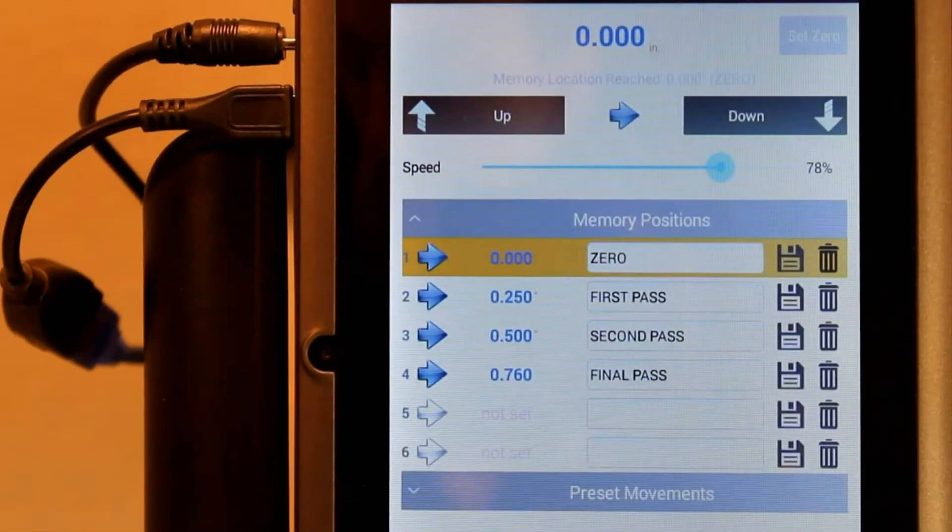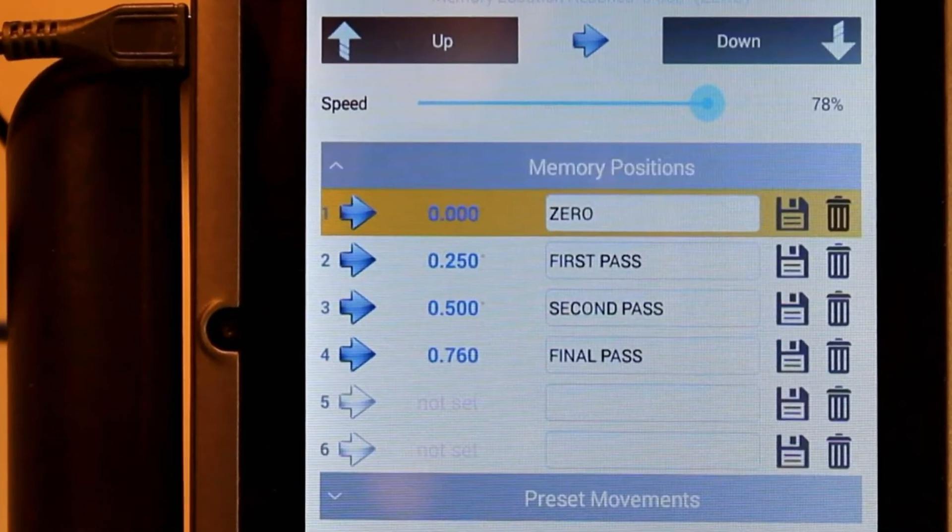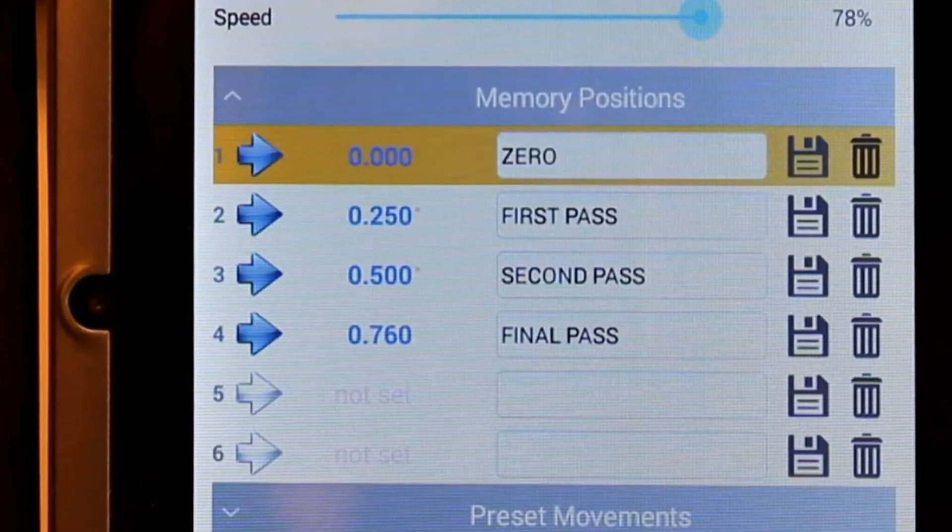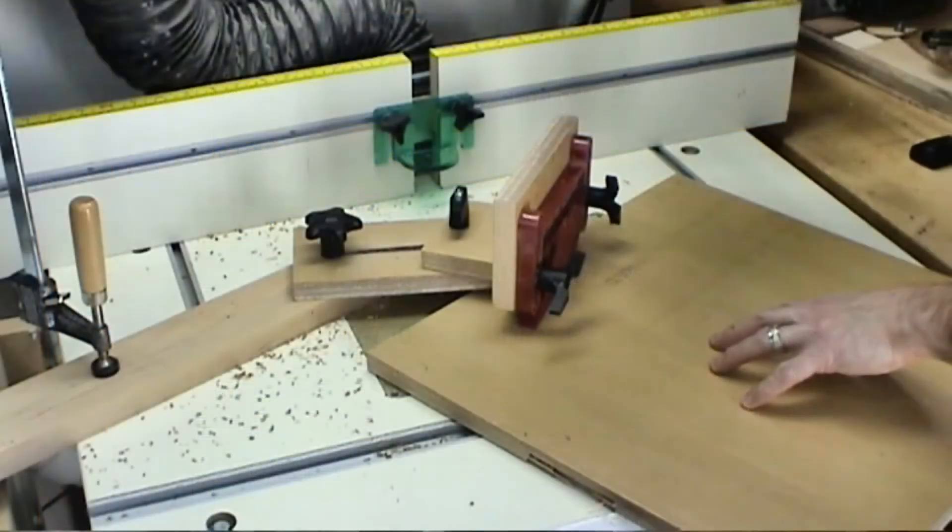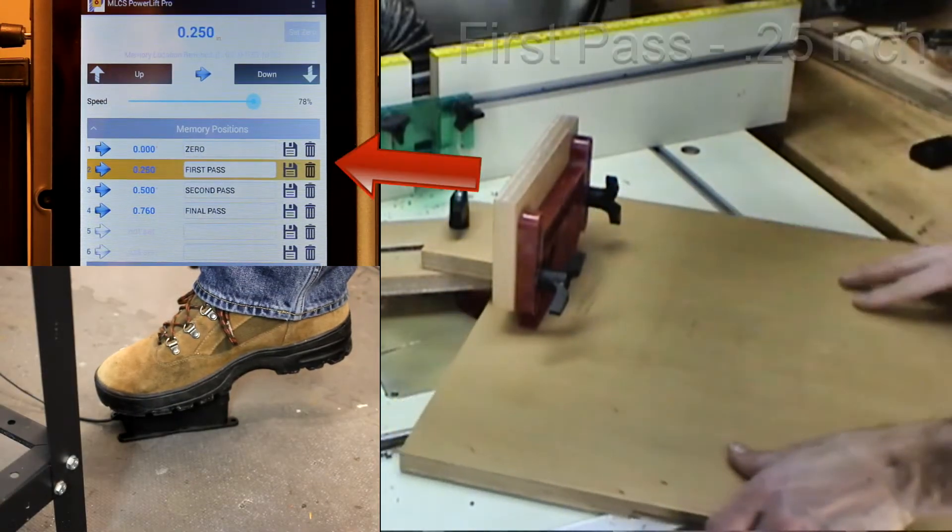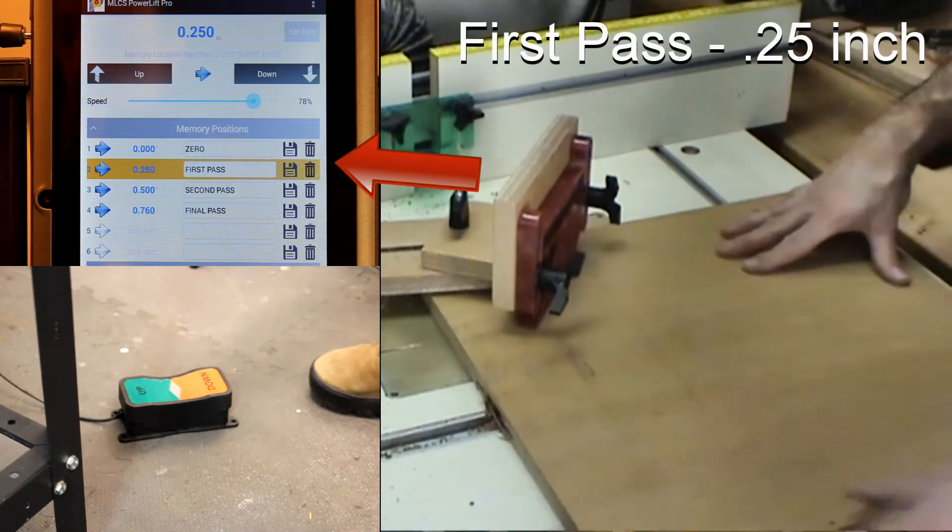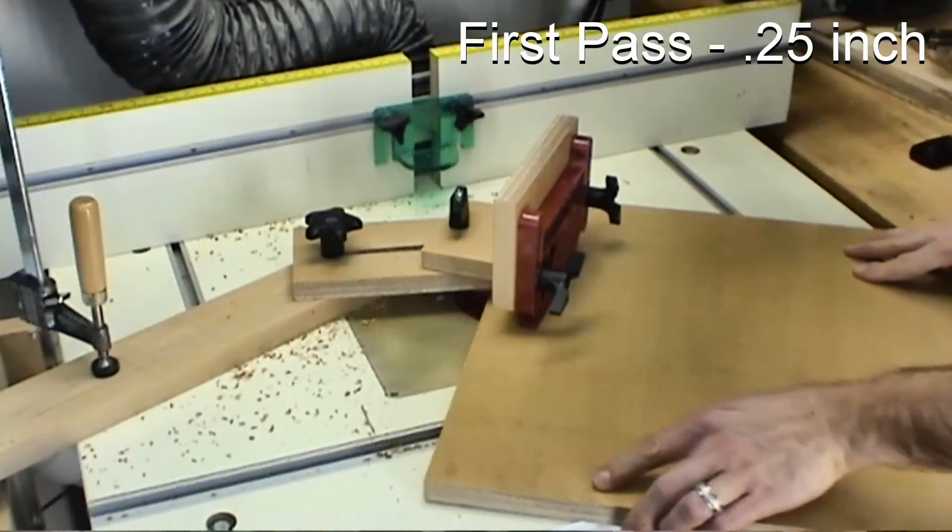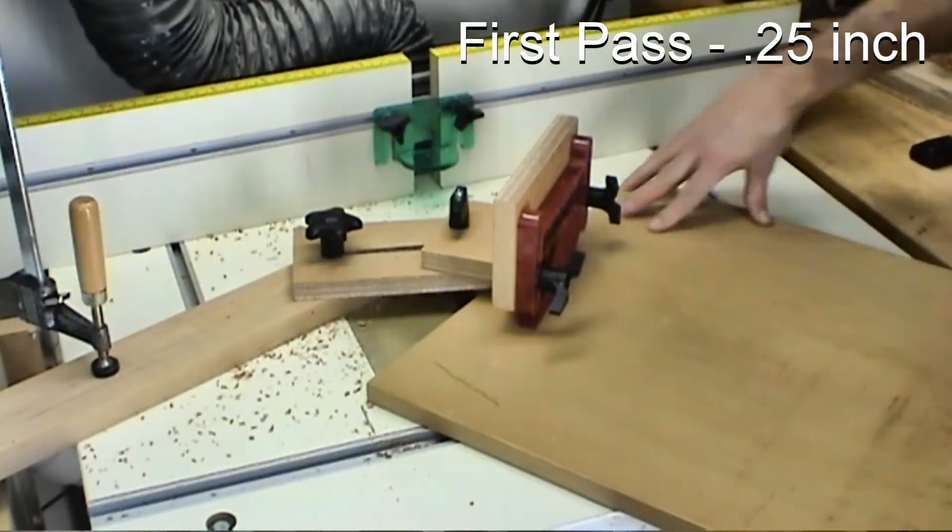This circle will be cut in three passes. The lift will automatically stop when it reaches a stored memory location. To resume the movement of the lift, release the pedal and press again. Pressing up on the foot pedal moves the lift into the first memory position. I rotate the board once around before raising the bit to the second memory position.